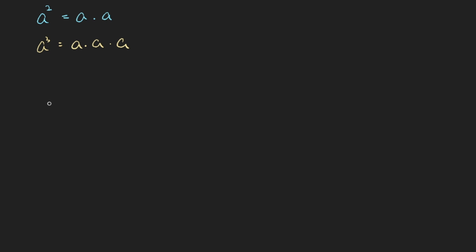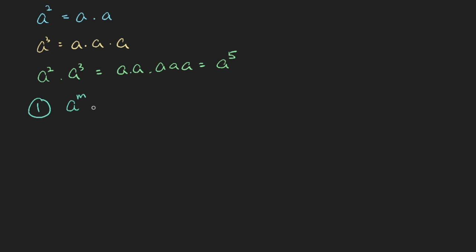So what happens when you have something like a to the power of 2 multiplied by a to the power of 3? This means that you have two pieces of a multiplied by three pieces of a, so altogether there are five pieces. You can see the first rule of indices: a to the power of m multiplied by a to the power of n equals a to the power of m plus n.